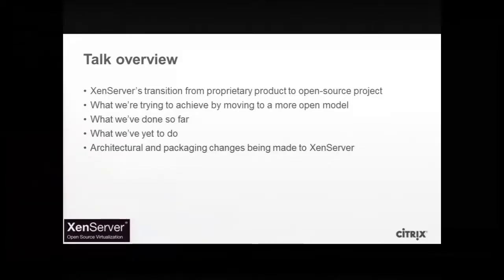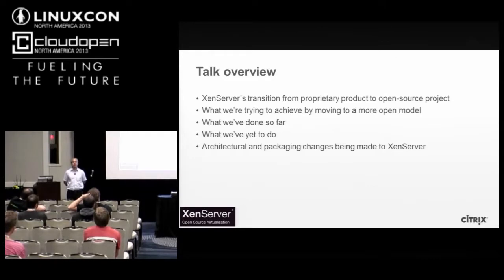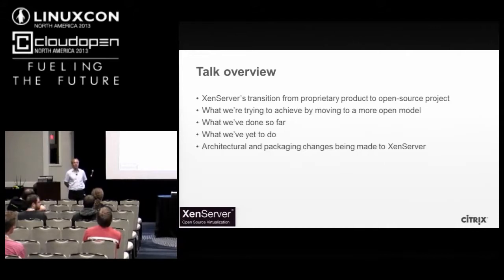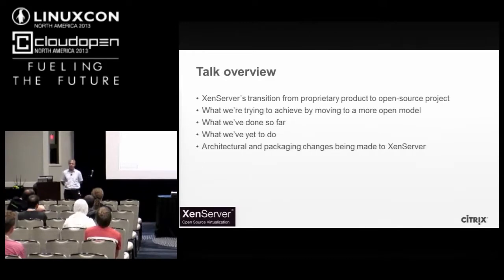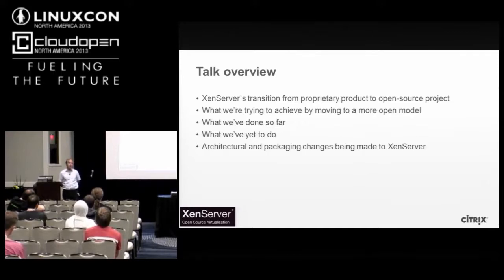So what I'm going to talk about today: I'm going to talk a bit about ZenServer's history, particularly as it relates to open source. We've heard lots of good things today from Jim on the value of open source collaboration. ZenServer's had an interesting history — originating with an open source hypervisor, moving through a proprietary product, to now making its transition towards being a fully open source project. I'll talk about some of the things we've done along the way, some of the things we got wrong, some of the things we're going to do about it — architectural and technical changes — and a little bit about where we're going with the platform in the future.